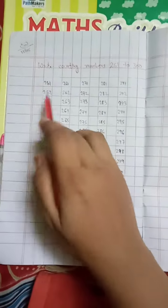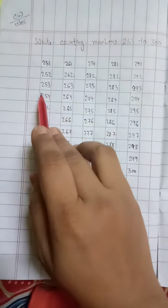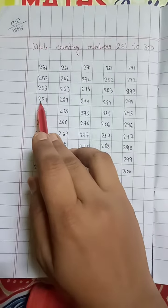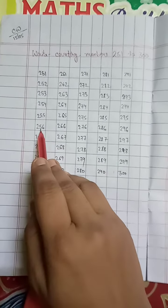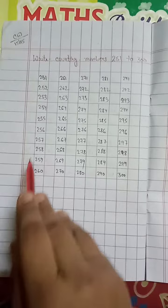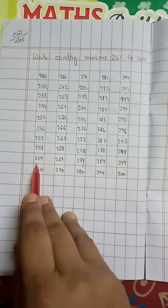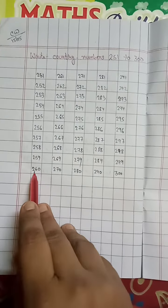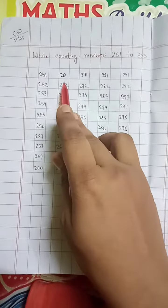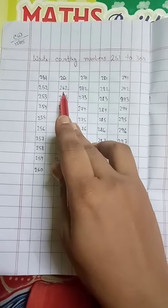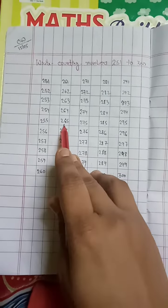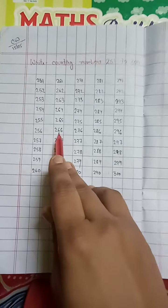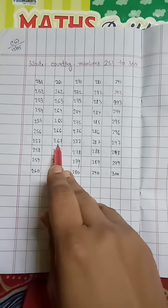To write: 251, 252, 253, 254, 255, 256, 257, 258, 259, 260, 261, 262, 263, 264, 265, 266, 267.